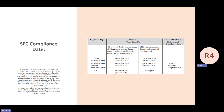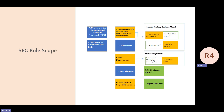What it implies — the scope of this rule — is that you have to review the TCFD. Because the SEC rule is based off the TCFD, the first chapter is really about explaining how TCFD works and what the risks are.